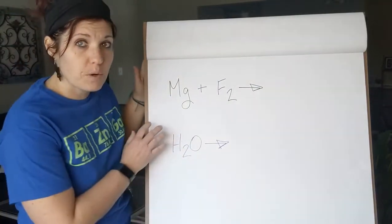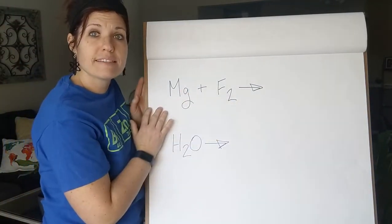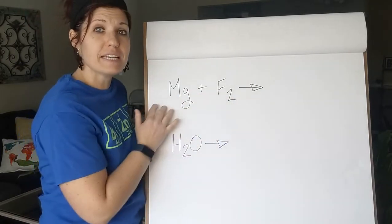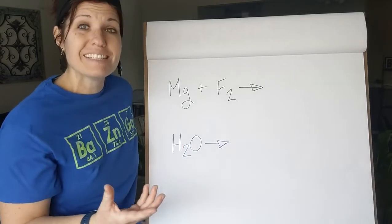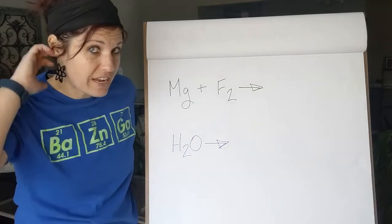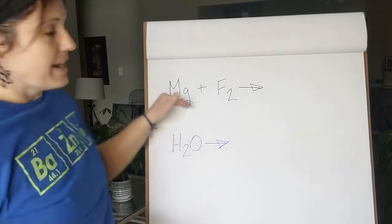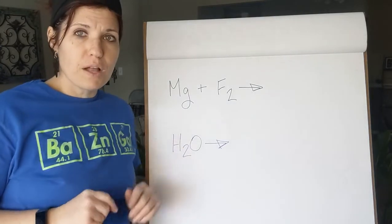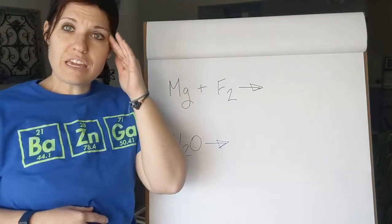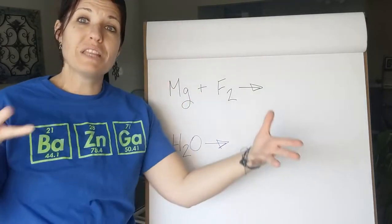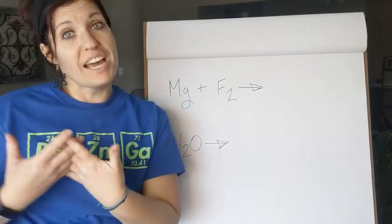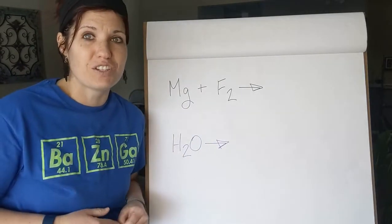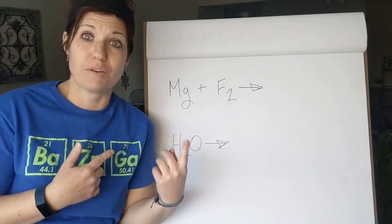The first thing to notice about this one is that we have two elements as reactants. Whenever you have two elements as reactants, it's a sign that it is going to be a synthesis or combination reaction. Whenever we recognize a synthesis reaction, we always want to think about their charges, because when they come together to form a compound, they're usually ionic compounds. We need to know their charges to make sure the compound is neutralized.